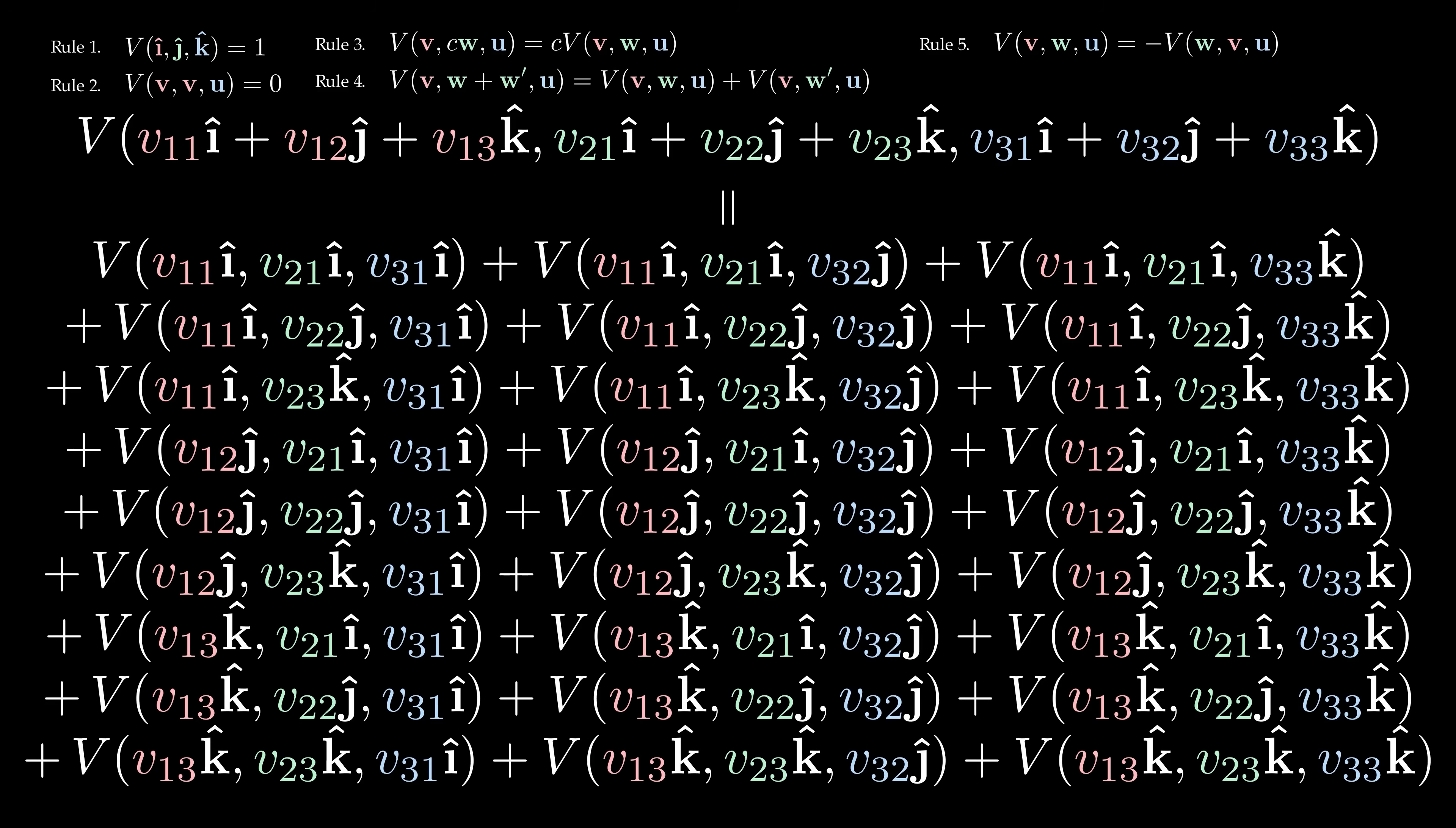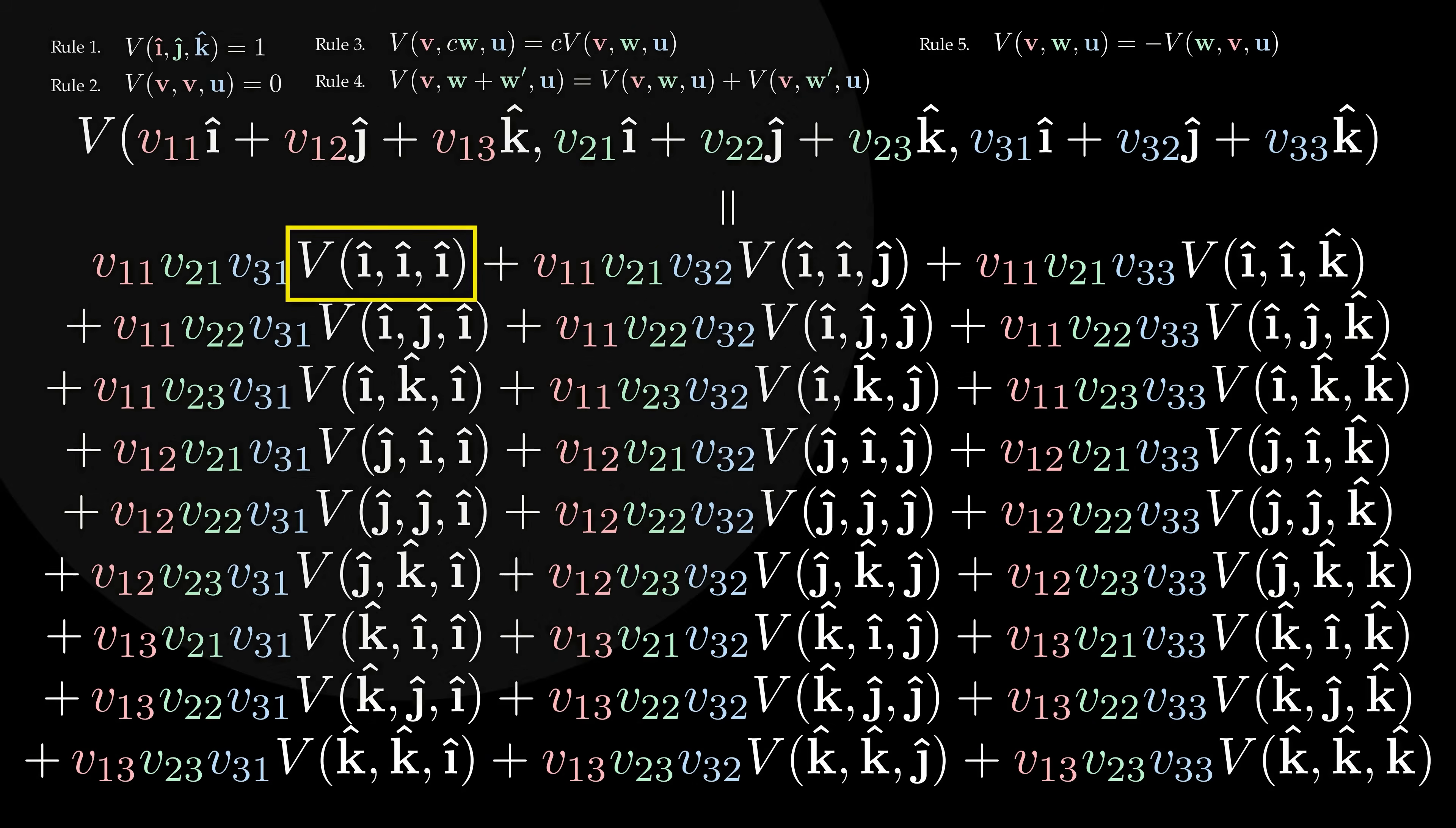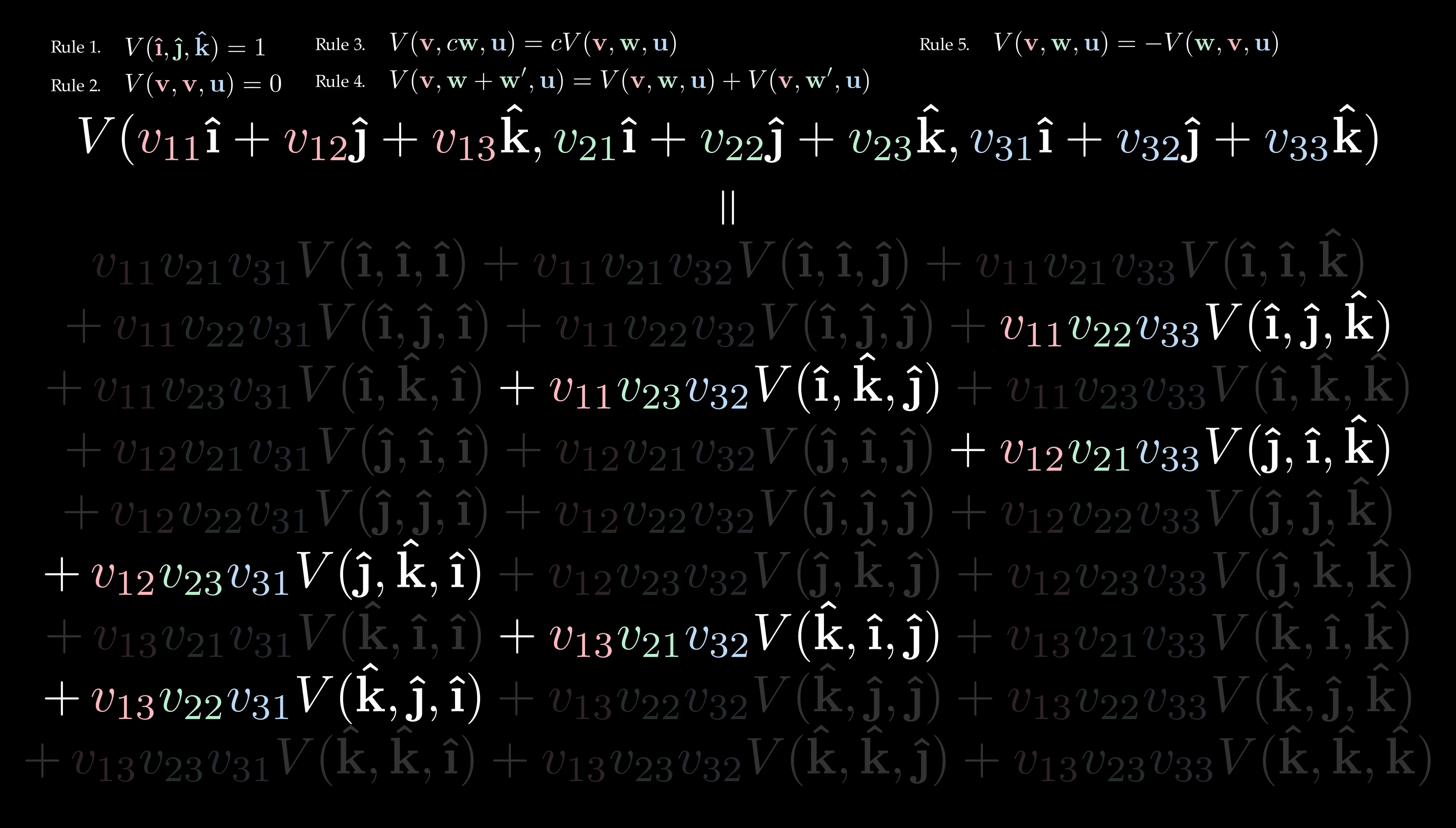Which gives this intimidating chunk of formula. But undeterred, we can apply rule 3 to pull the constants out of the volume function V. We then see that most terms have some repeated vectors inside, so by rule 2, they must disappear. So it really isn't that bad. We're left with only 6 terms.